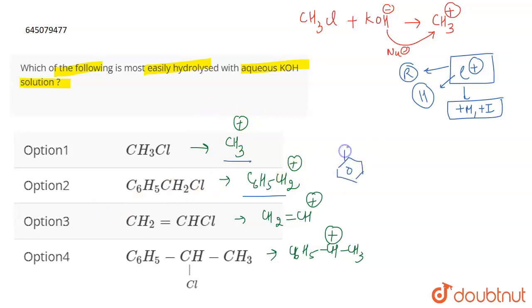Now this is a benzene ring and then a CH2 positive. This is the carbocation which is there. Now this is stabilized by resonance.